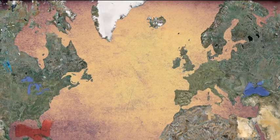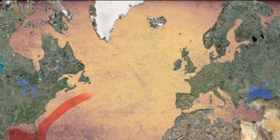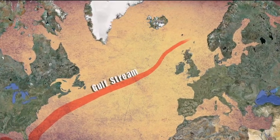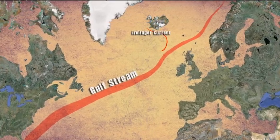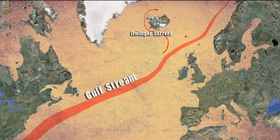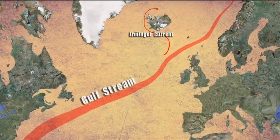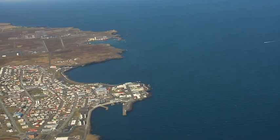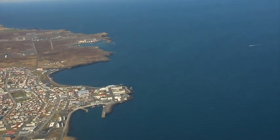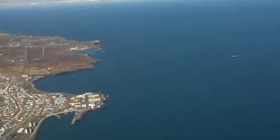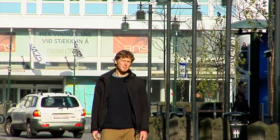It turns out that the ocean out here is bringing part of the Caribbean heat with it. The Gulf Stream, starting in the Gulf of Mexico, carries warm water north and east. A branch of the Gulf Stream called the Irminger Current splits off and flows along the southern and western coast of Iceland, warming the air and creating milder temperatures on land. So can anything else affect our global climate?